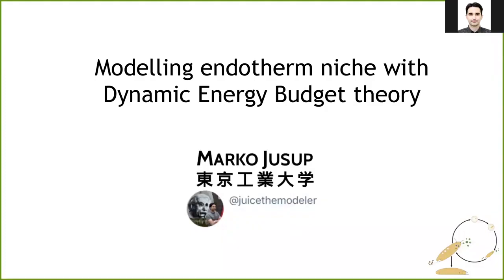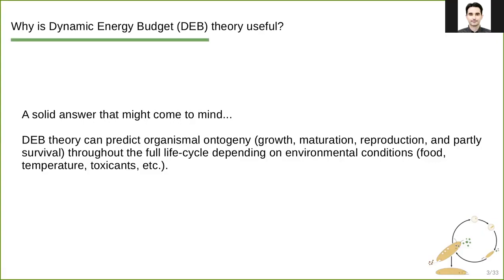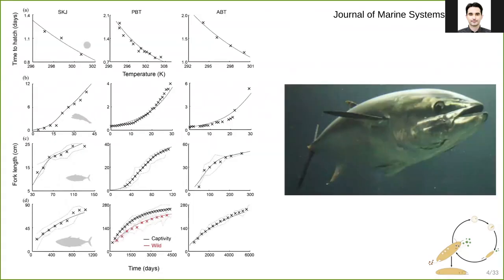Hello everyone, thank you for being here today. We'll be talking about modeling endotherm niche with dynamic energy budget theory. I'm your host Marco Yousup, currently an assistant professor at the Tokyo Institute of Technology. Let's start with the question: why is dynamic energy budget theory useful? A solid answer is that DEB theory can predict organismal ontogeny — growth, maturation, reproduction, and in part survival — throughout the full life cycle, depending on environmental conditions such as food, temperature, and toxicants.